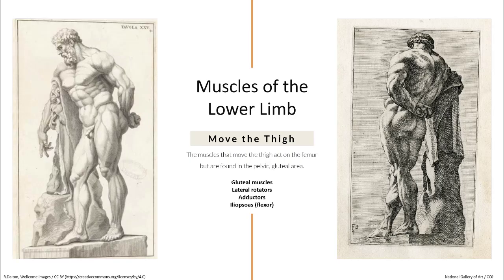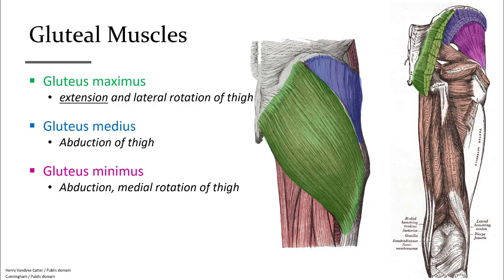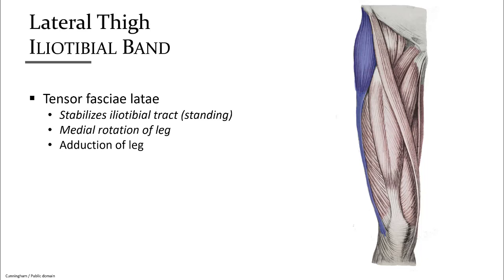On to the muscles of the lower limb, specifically the thigh. The buttock region is where we find the three gluteal muscles. The largest and most superficial is gluteus maximus, which extends the leg along with lateral rotation. Underneath and more lateral in blue is gluteus medius, involved in abduction of the thigh. Underneath that is gluteus minimus in pink, which also helps with abduction of the thigh. Along the lateral side of the thigh, beginning from the iliac crest and going past the knee to the top of the tibia, is the iliotibial band, also known as the IT band.